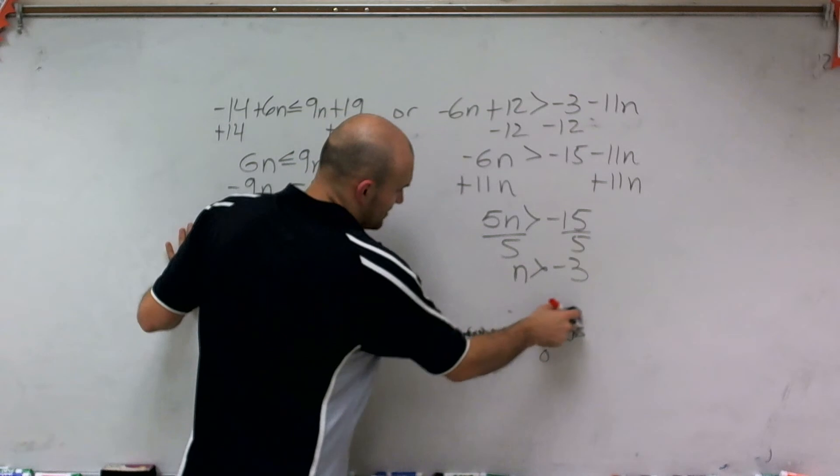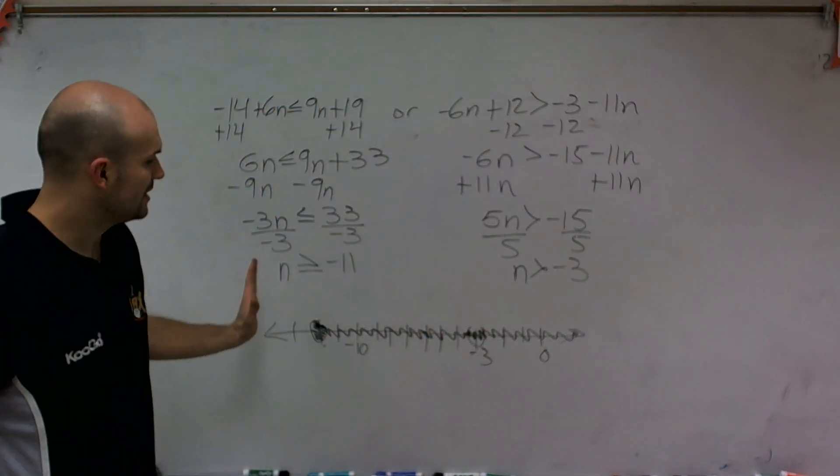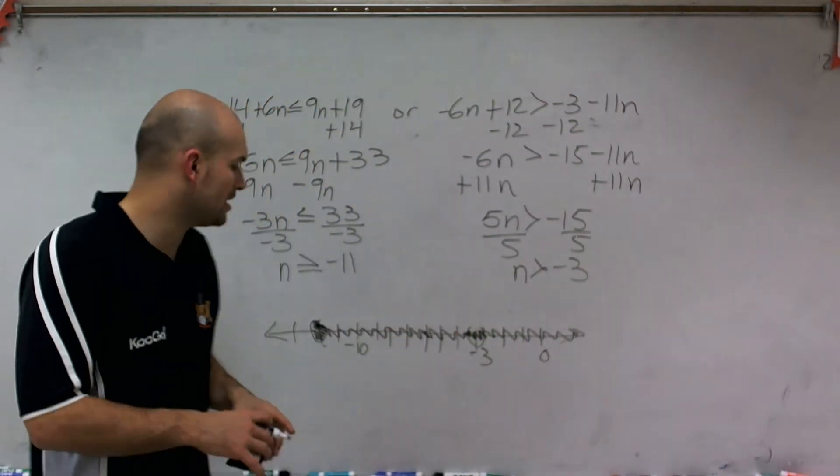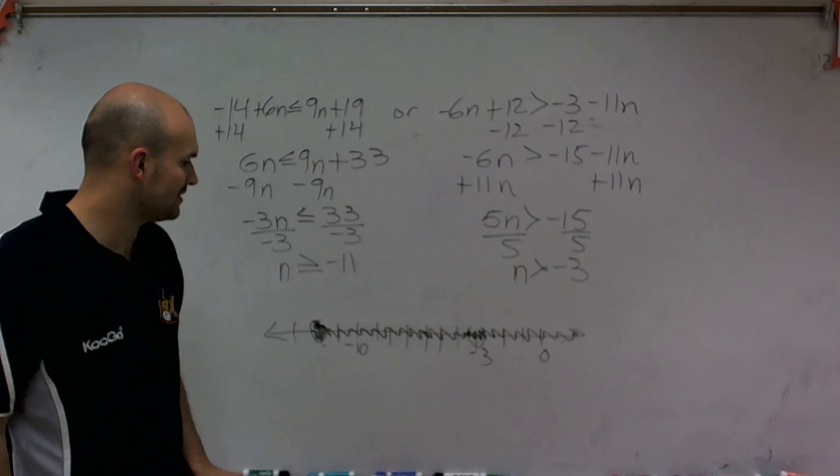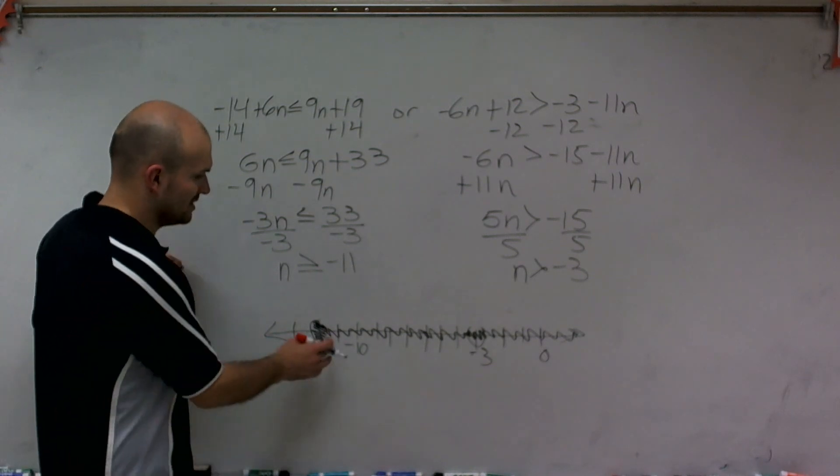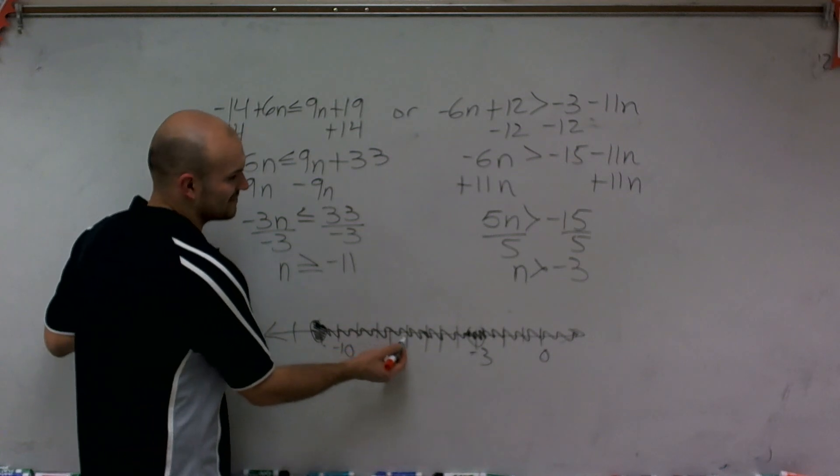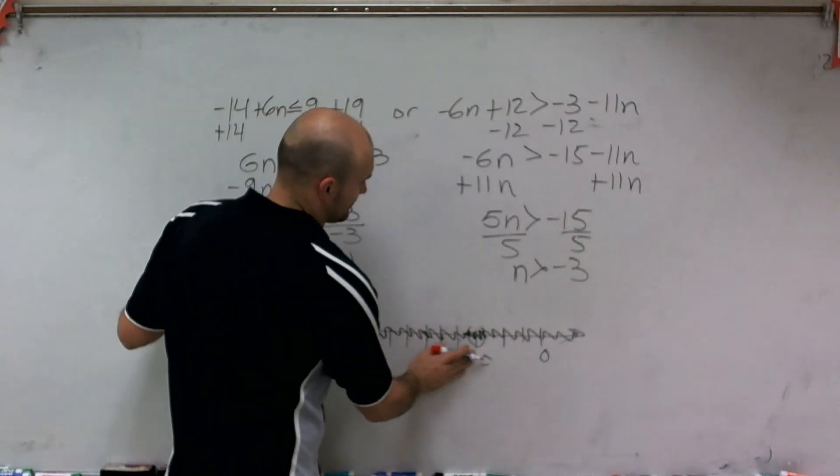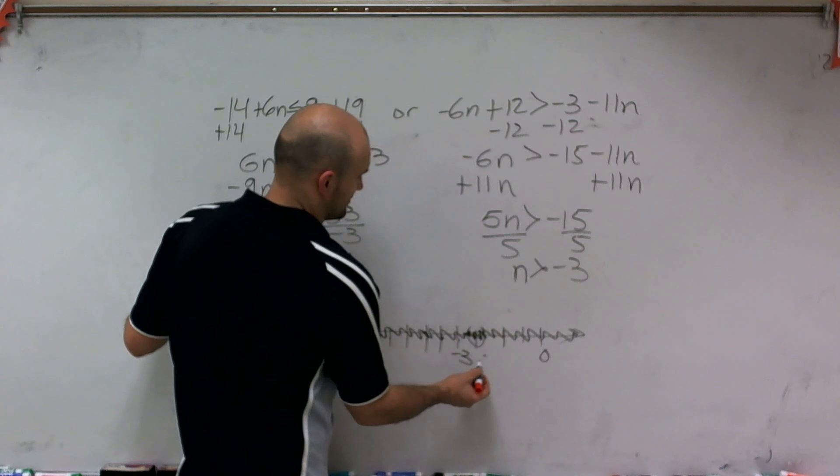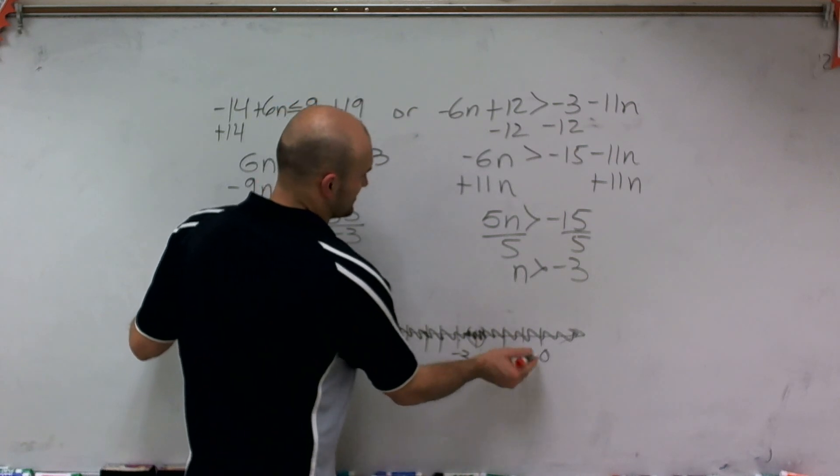So therefore, I can now just kind of eliminate the rest of this. And we notice that it's going to be all the values true from negative 11, which that's, let's say, that's negative 10, negative 9, negative 8, 7, 6, 5, 4, 3, 2, 1, 0.